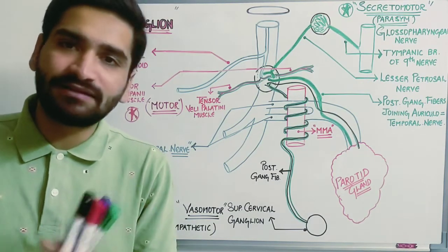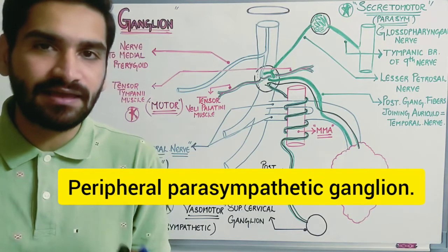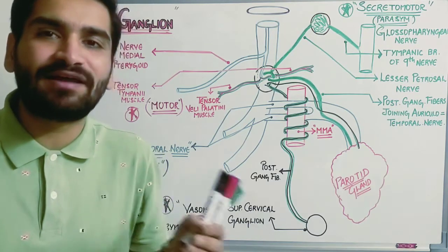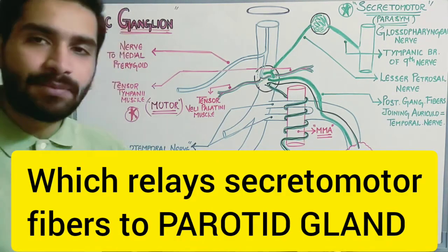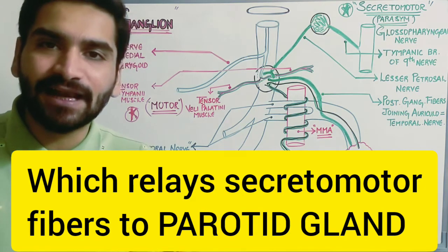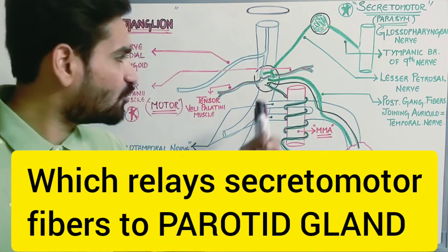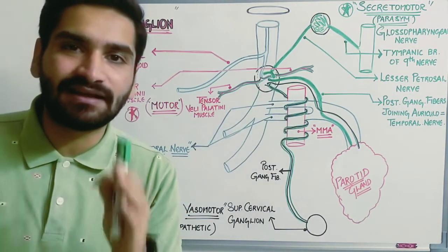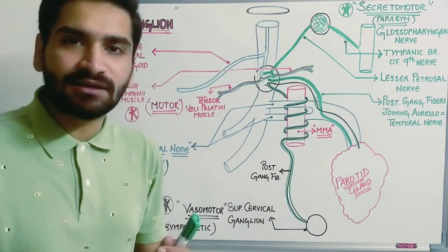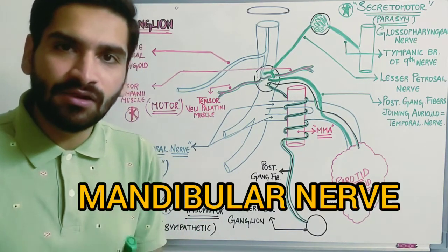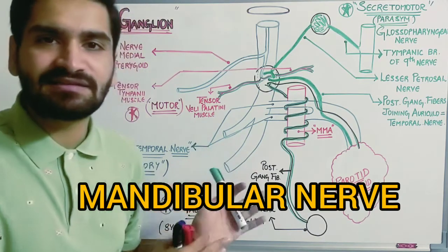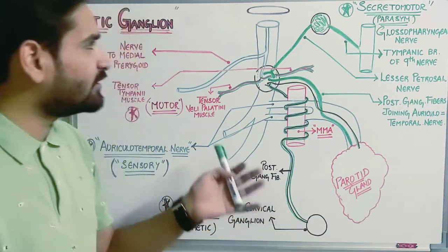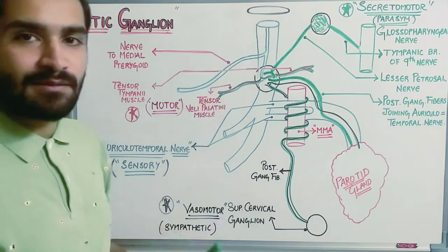The otic ganglion is a peripheral parasympathetic ganglion which relays or conveys the secretomotor fibers to the parotid gland. Whatever secretomotor fibers are destined for the parotid gland will pass through the otic ganglion. To understand this topic better, we need to recall some basic concepts regarding the mandibular nerve. You can watch my previous video on the mandibular nerve on this channel.